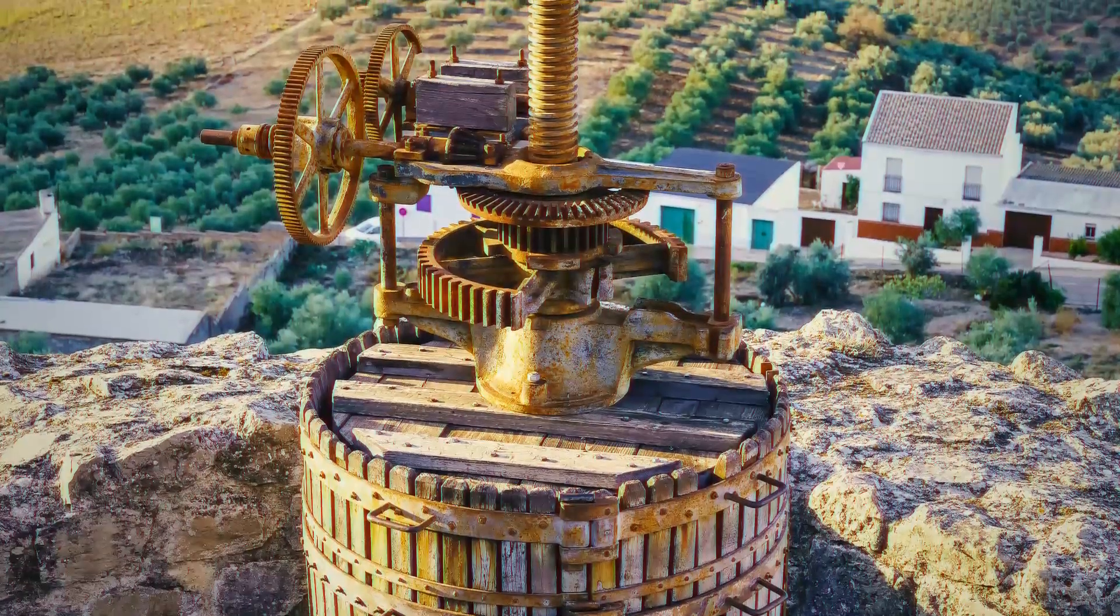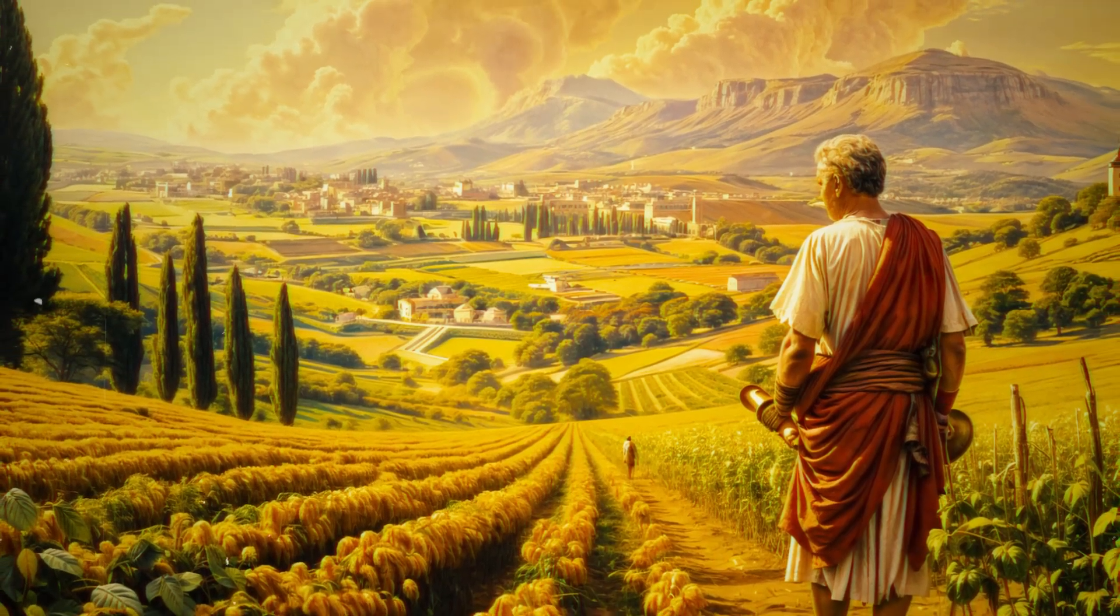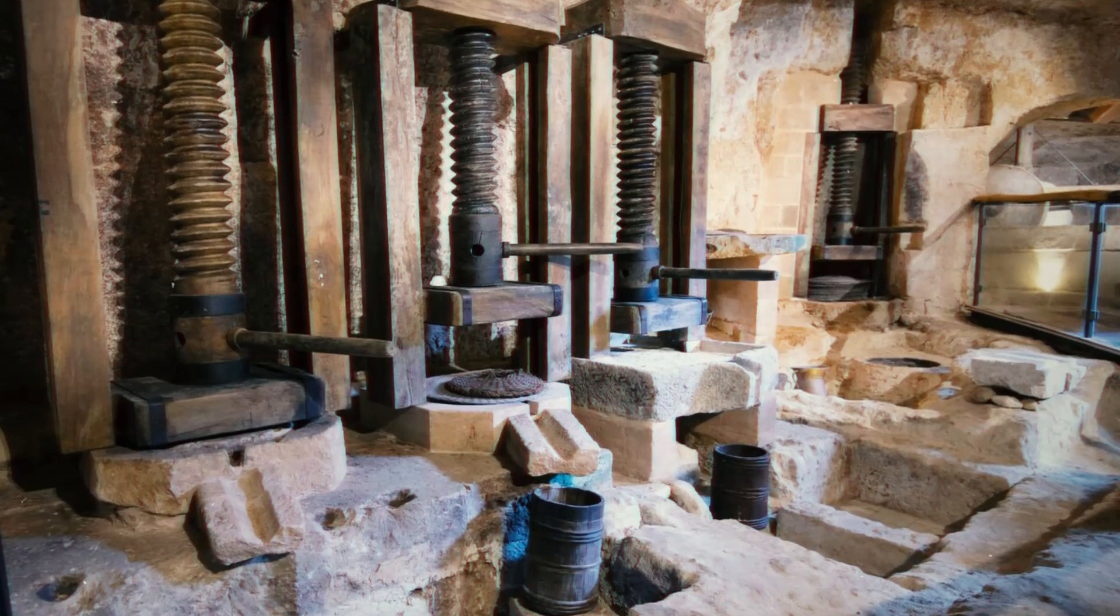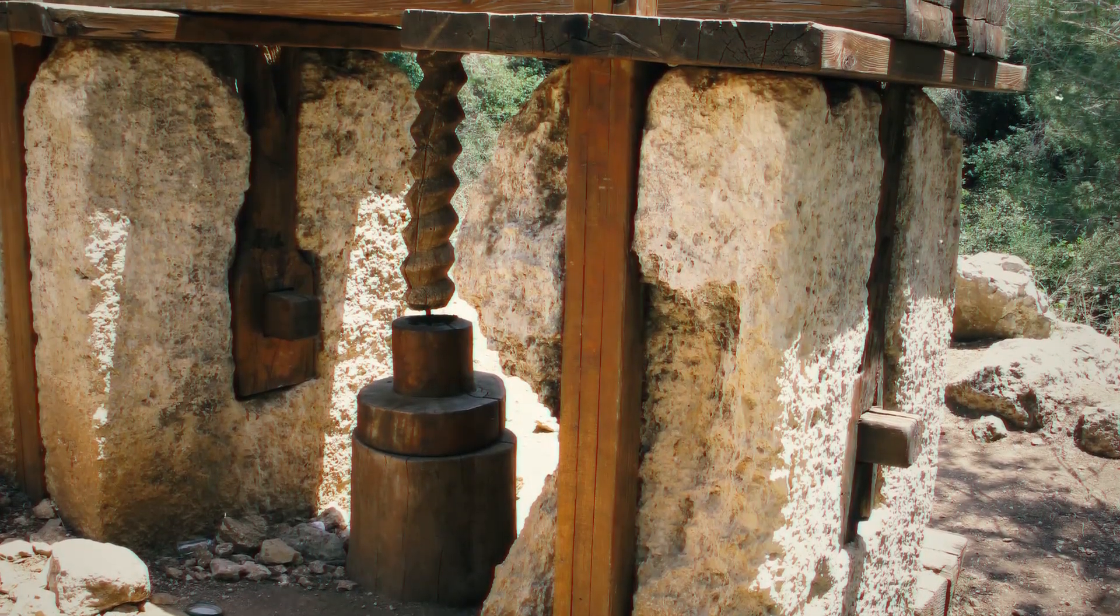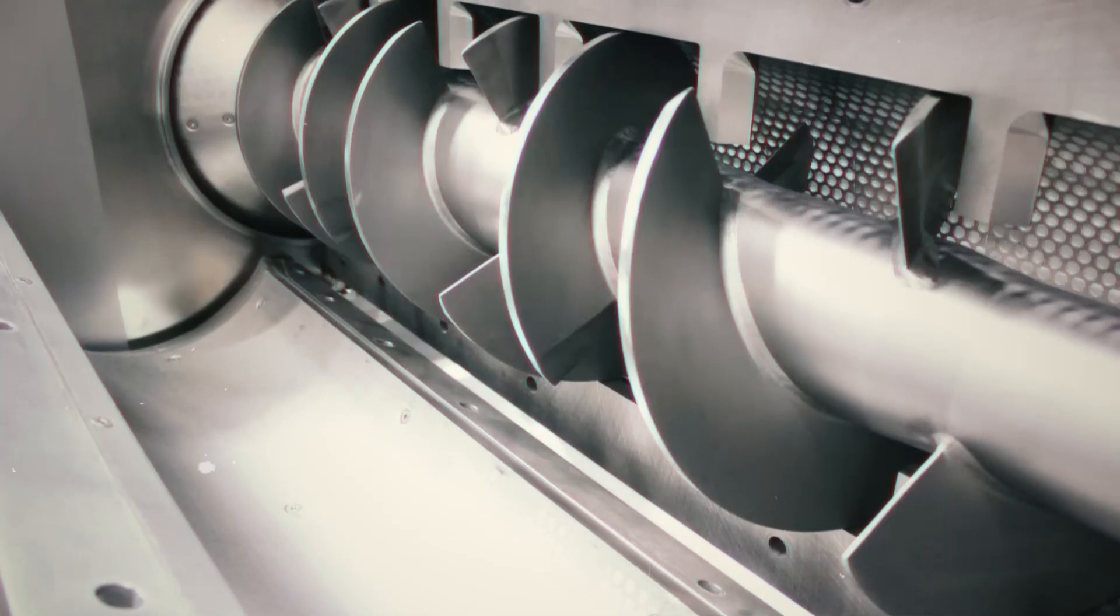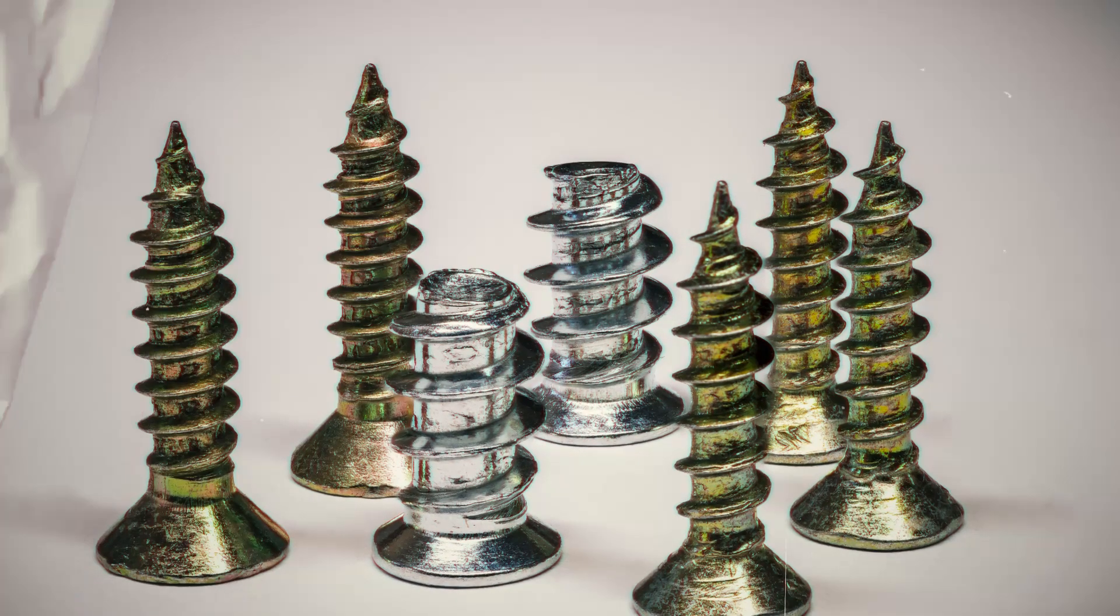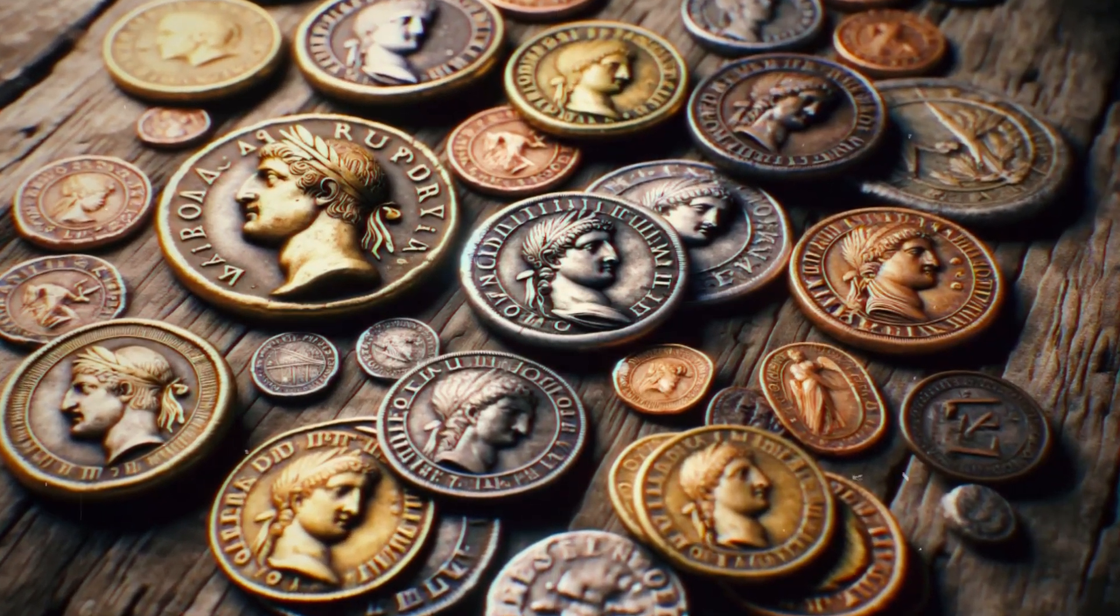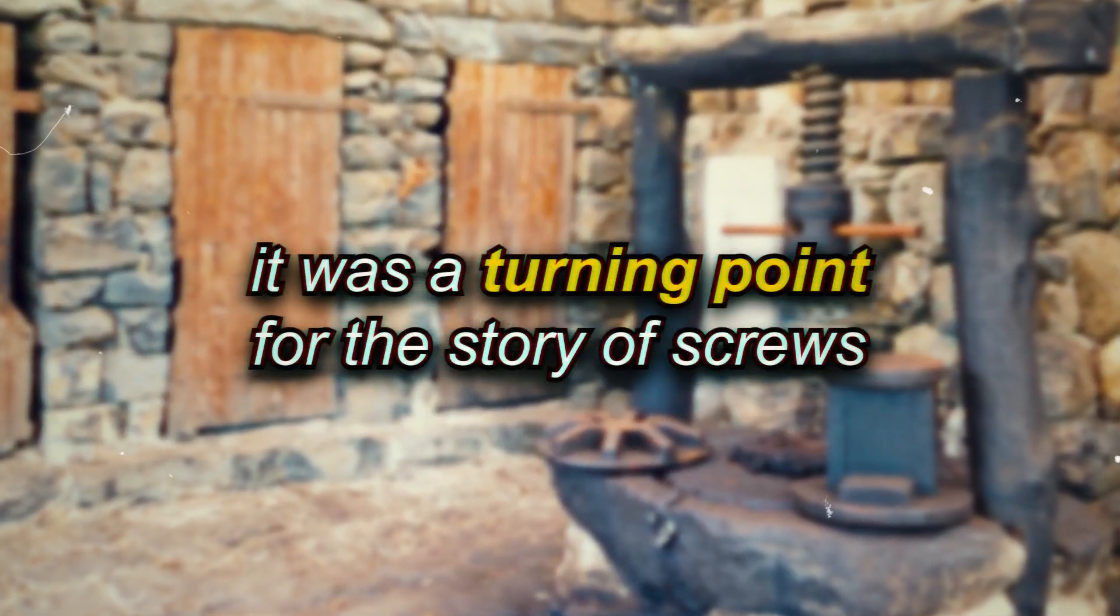What used to take hours could now be done in minutes, allowing Roman farmers to produce goods on a larger scale. These innovations were about more than just convenience. They were crucial for survival and growth. The screw press didn't only transform agriculture. It also laid the groundwork for mechanical tools that would dominate future industries. Screws helped solve important problems and allowed the Roman Empire to expand its economy and trade. This wasn't just a breakthrough for agriculture. It was a turning point for the story of screws.